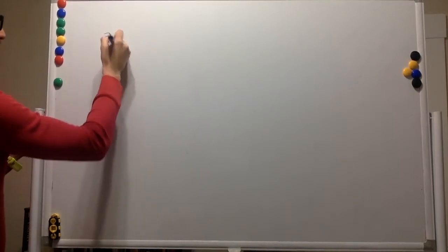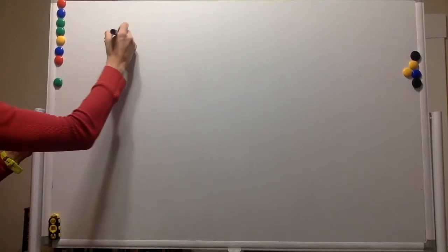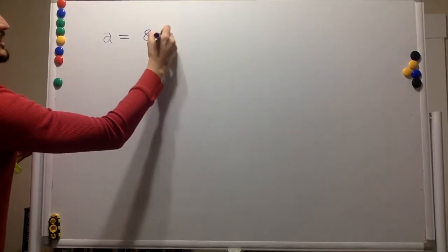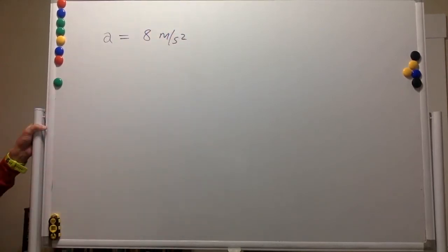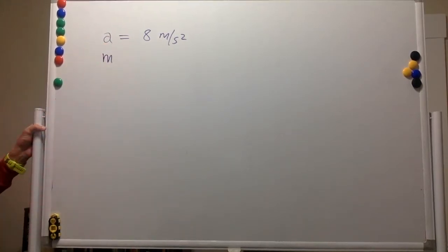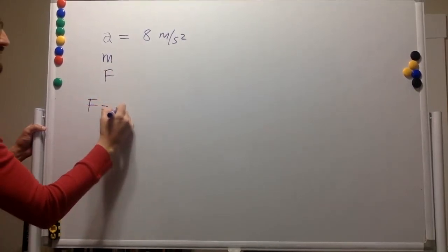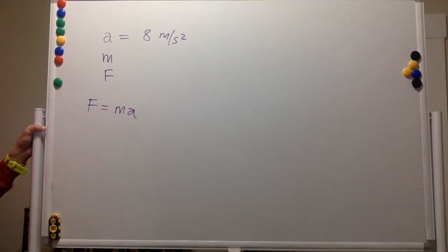In this problem, we have an object with a constant force being applied to it, so the object accelerates with a magnitude of 8 meters per second squared. That is all the information we have — there is a mass and there is a force, and we know that force equals mass times acceleration.